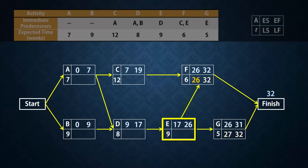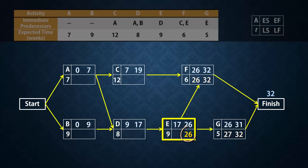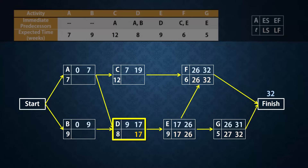E has two successors, F and G. The latest start times are 26 and 27 respectively. As a result, the latest time E has to finish has to be 26 in order for F to start. When doing the backward pass, the latest finish time of an activity must be the minimum of the latest start times of its successors. Thus, the latest start time for E will be 26 minus 9, which gives 17. D has only one successor, E. So the latest finish time for D will be the latest start time for E, which is 17. And the latest start time will be 17 minus 8, which gives 9 for D.